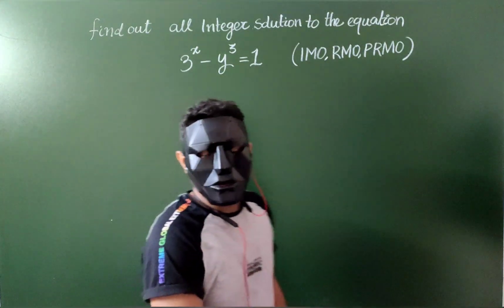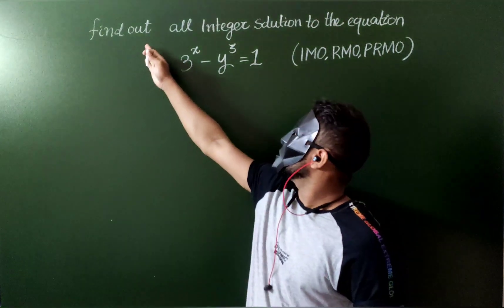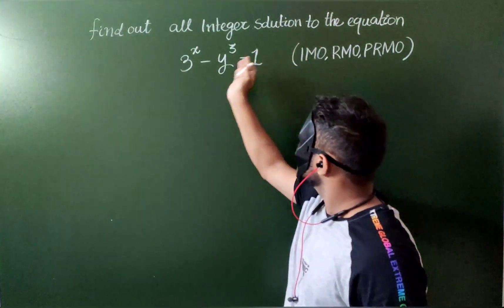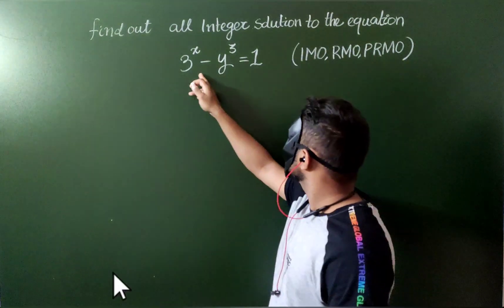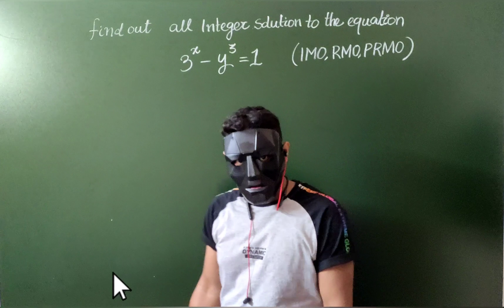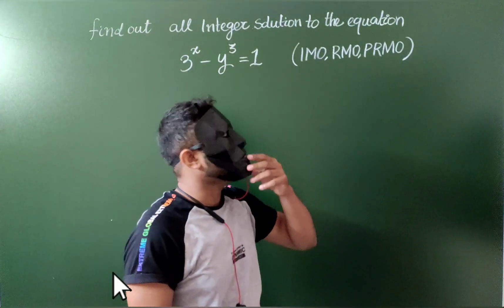Hello everyone. Today we are going to solve this number theory problem. Find out all integer solutions to the equation 3 to the power of x minus y cube is equal to 1. This question is really suitable for IMO, RMO and PRMO.